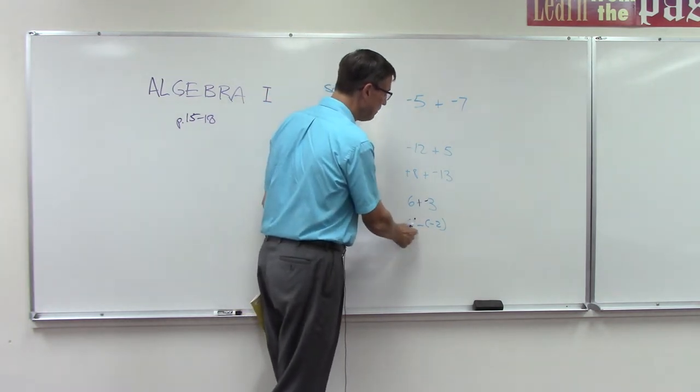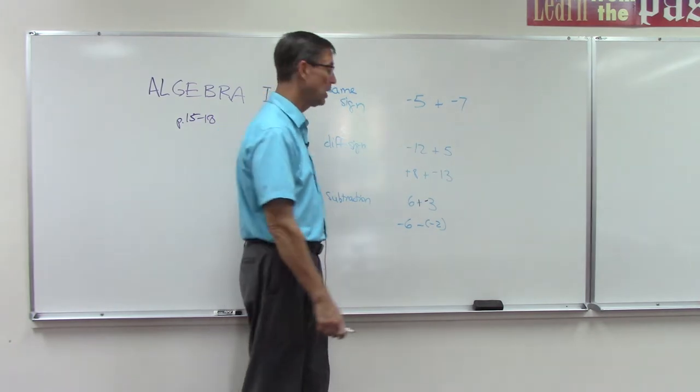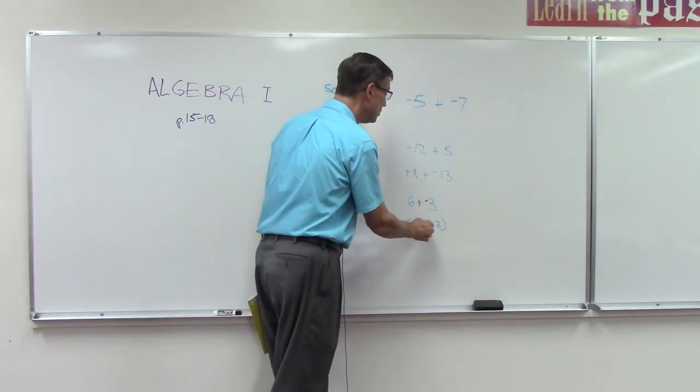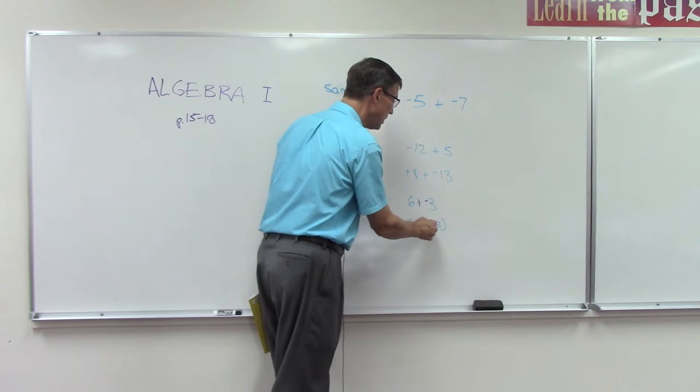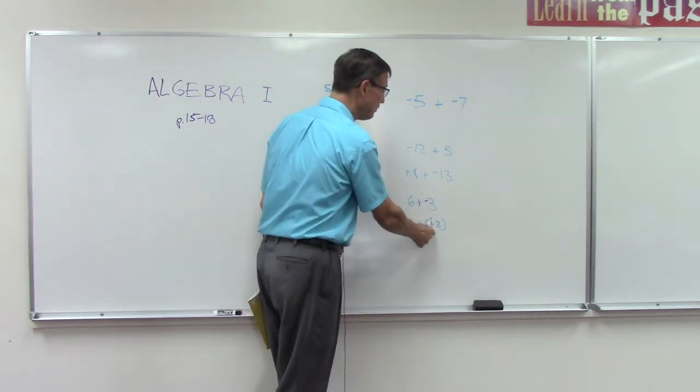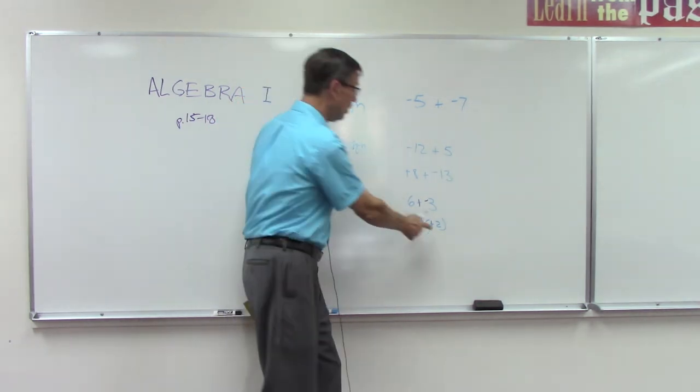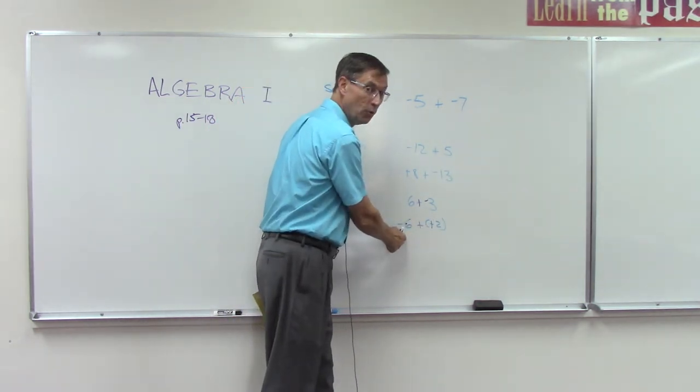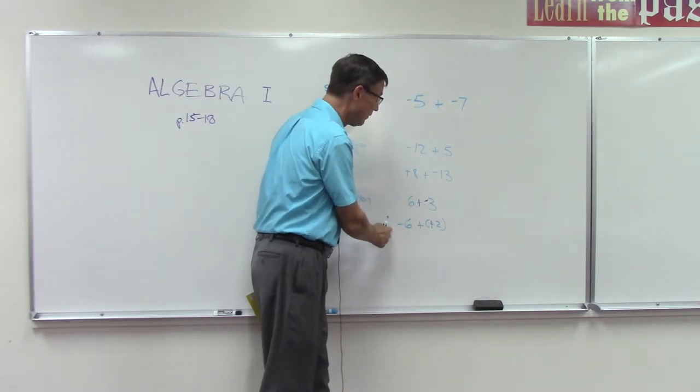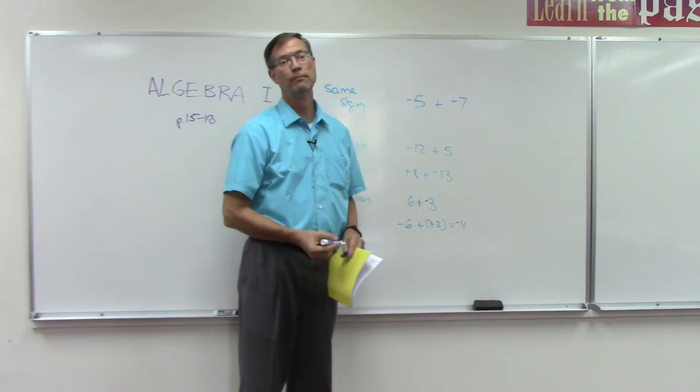Let's apply the rule. We're going to change subtraction to addition and change the second number to its opposite. So now we're saying negative 6 plus positive 2. The signs are different. Subtract the smaller from the larger, so get 4. Keep the sign of the larger, so we would get negative 4. See, that's not so hard.